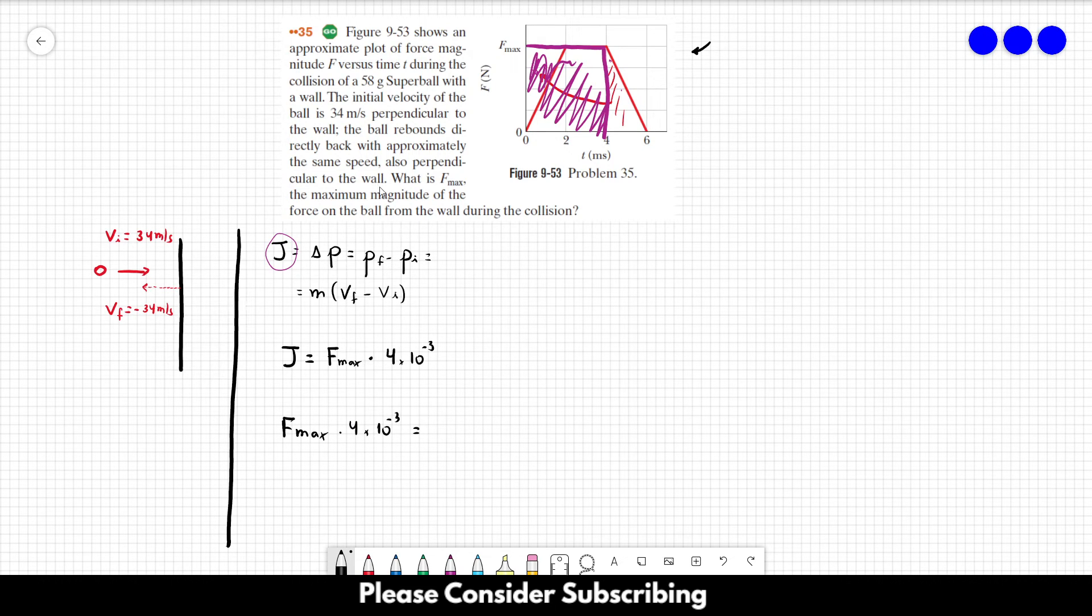That multiplies minus 34 minus the initial velocity. So minus minus 34, right? This is the equation.